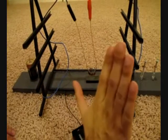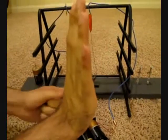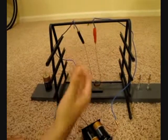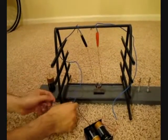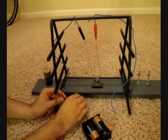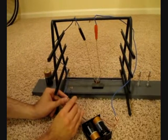With my thumb in the direction of current flow, counterclockwise, and my fingers in the direction of the magnetic field, my palm faces in the direction of the resulting force, in this case, away from the magnet.